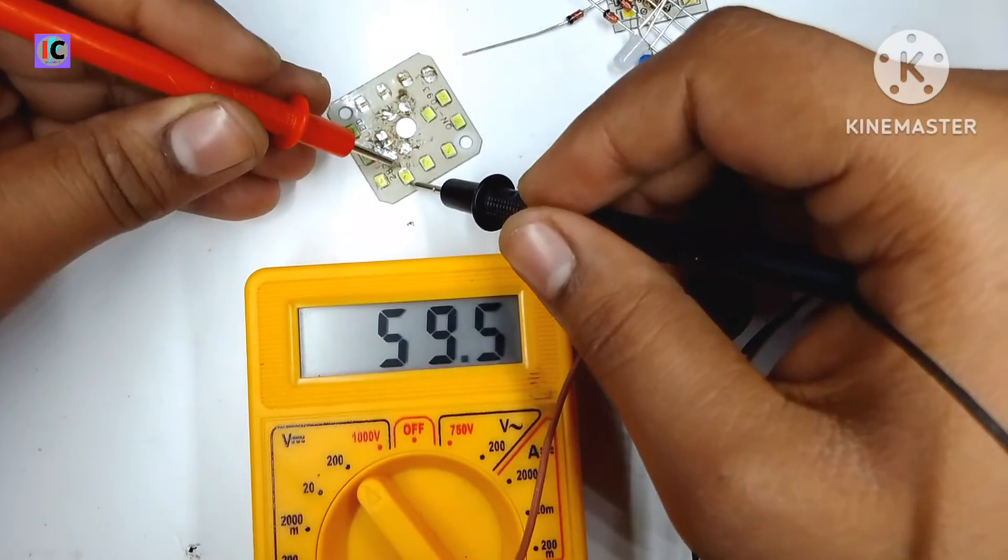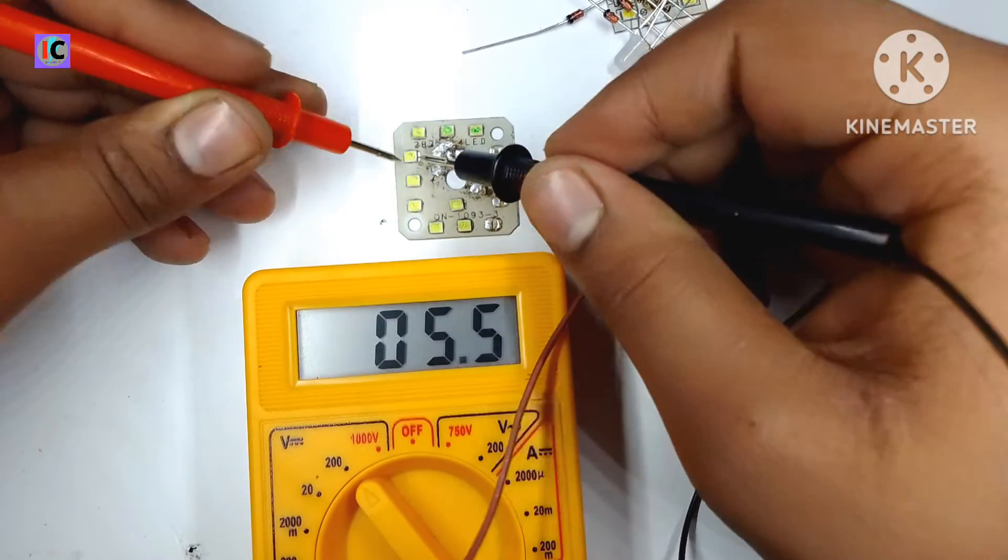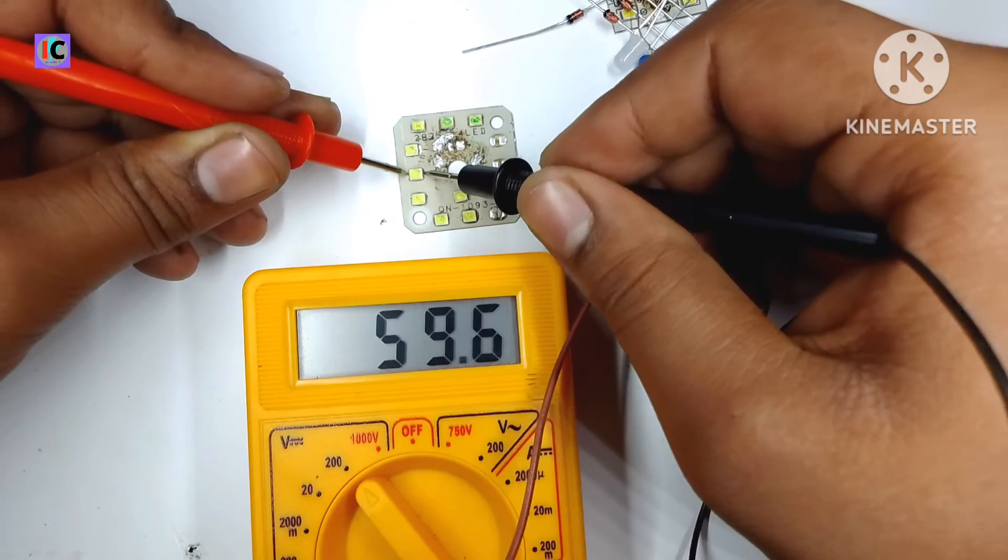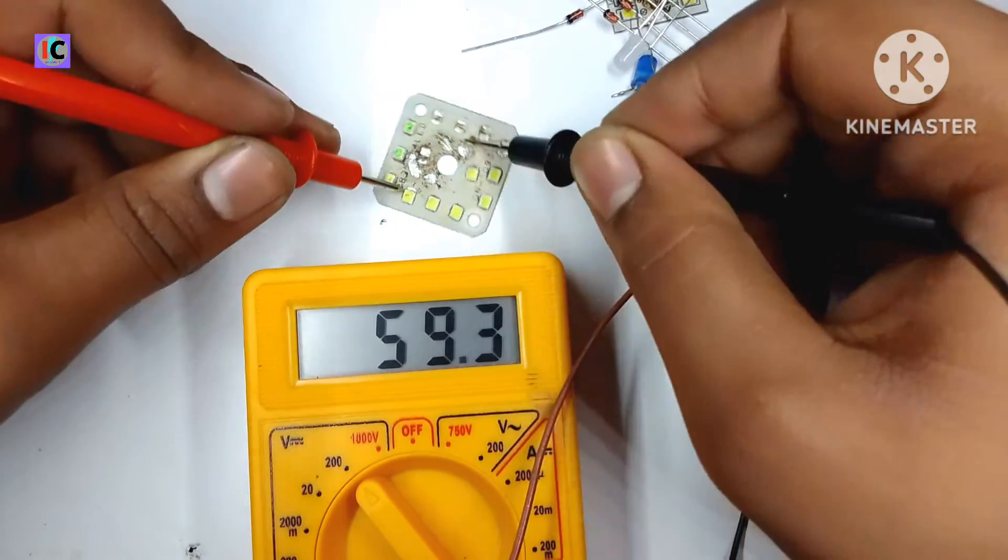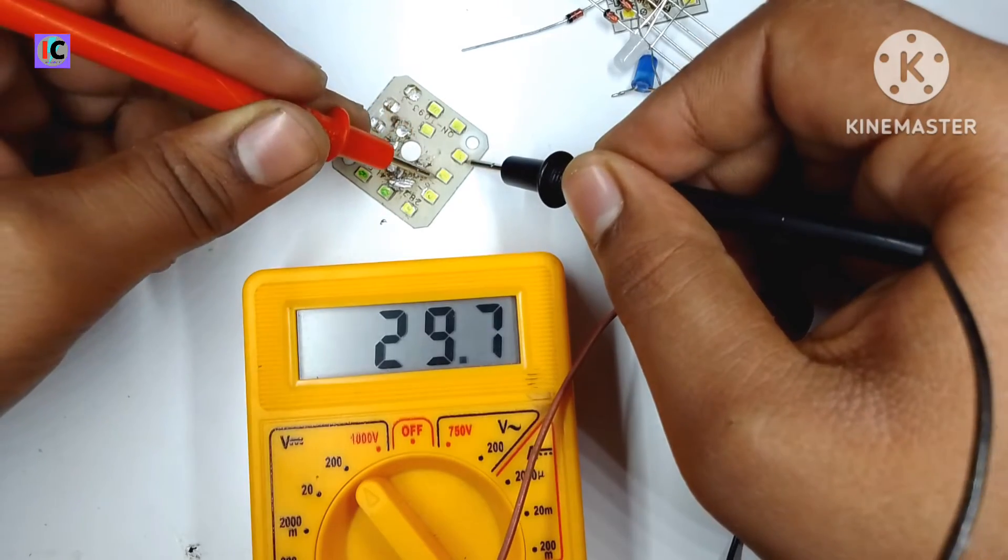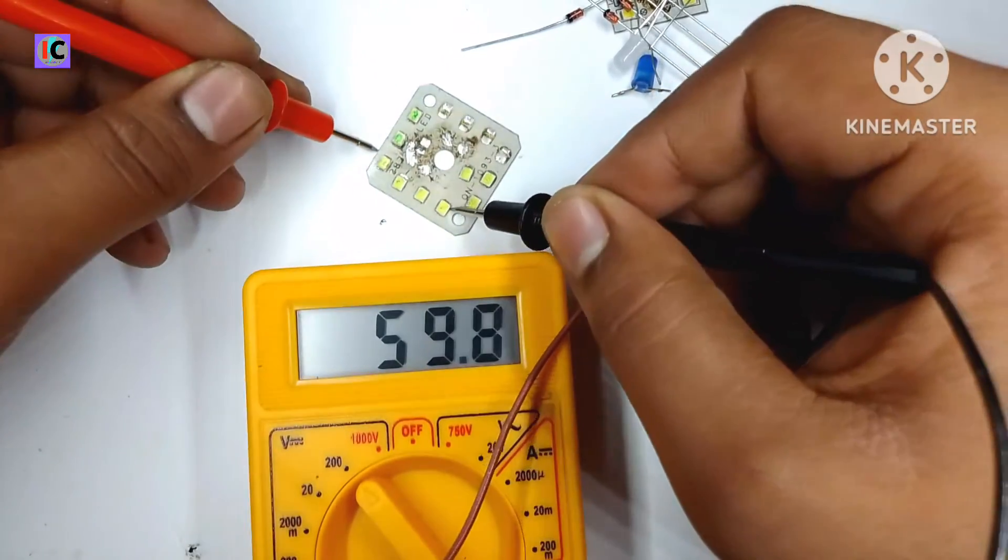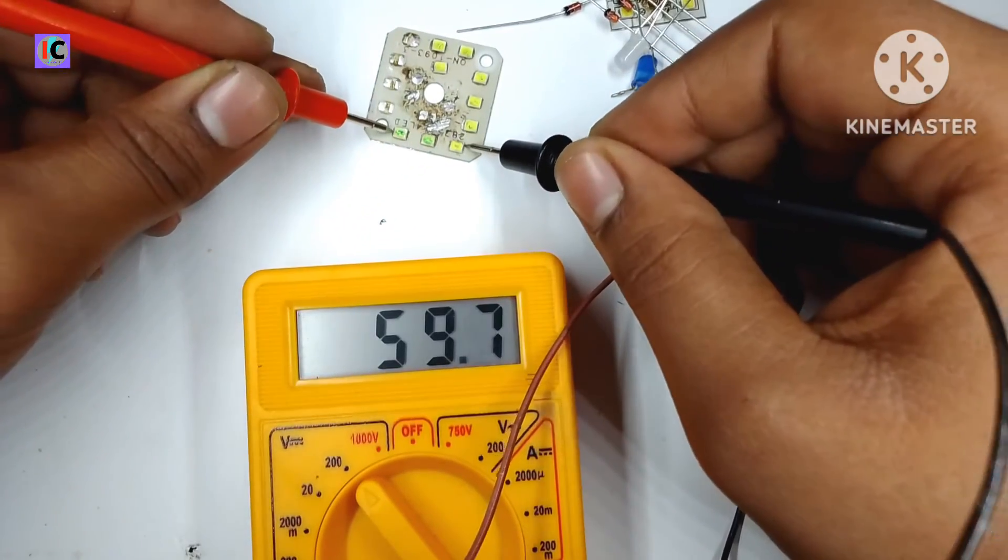So here I am testing also another MCPCB LED. So here all the LEDs are 5.5 volts but some are damaged so have to replace the LED and it will be repaired.